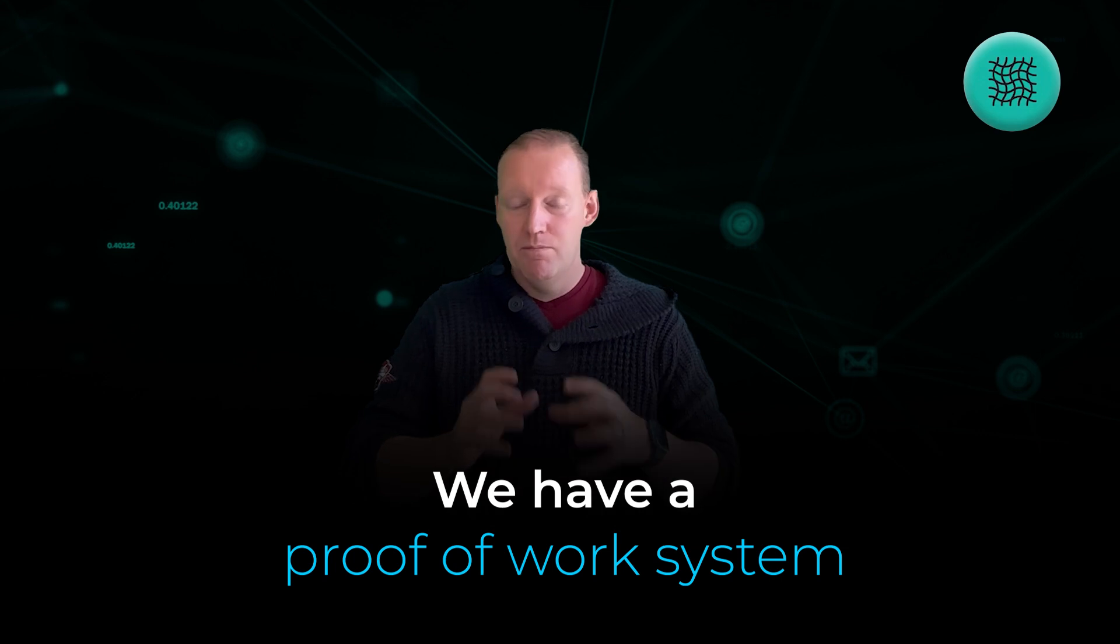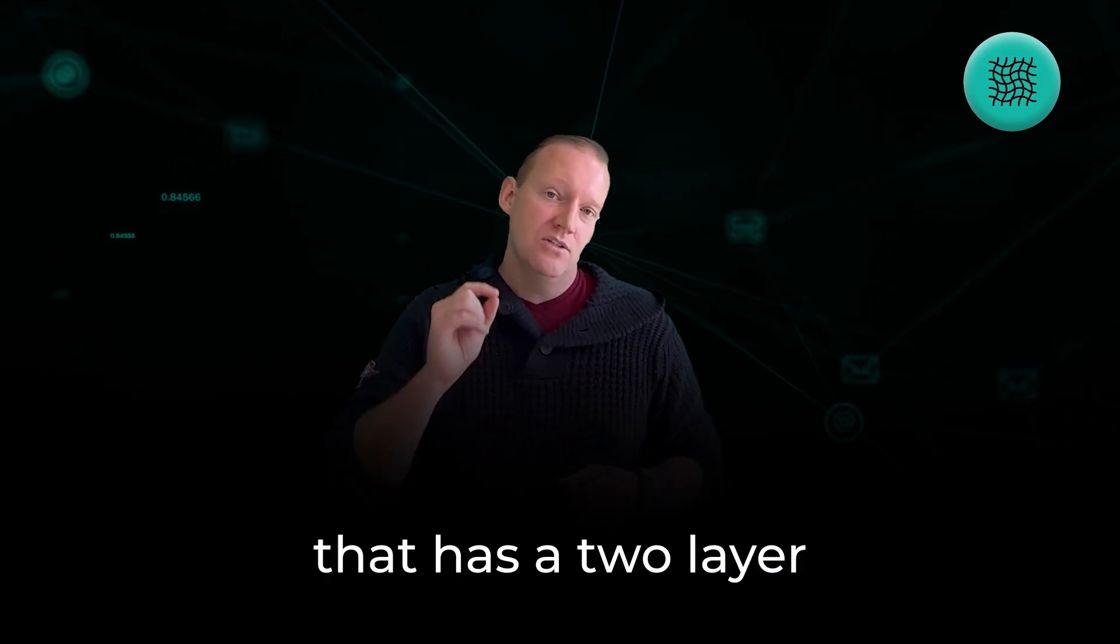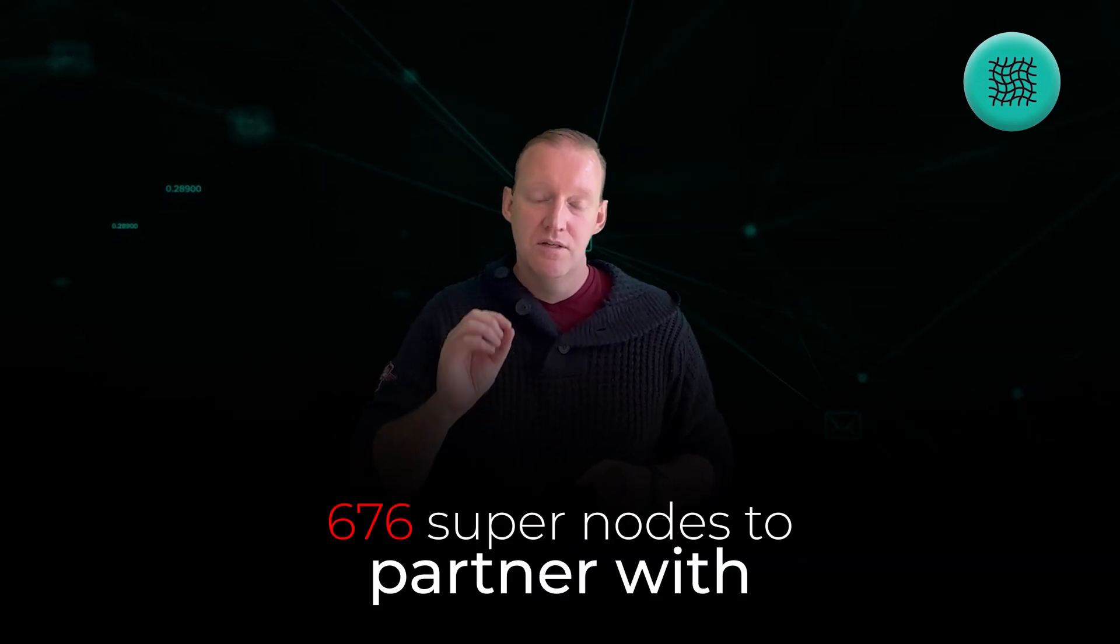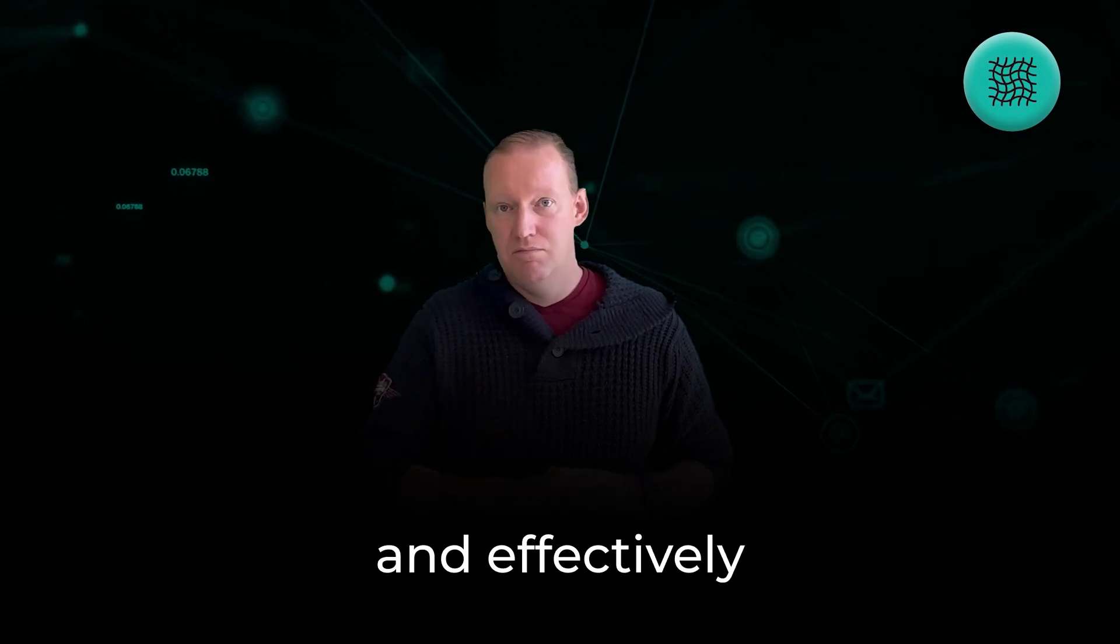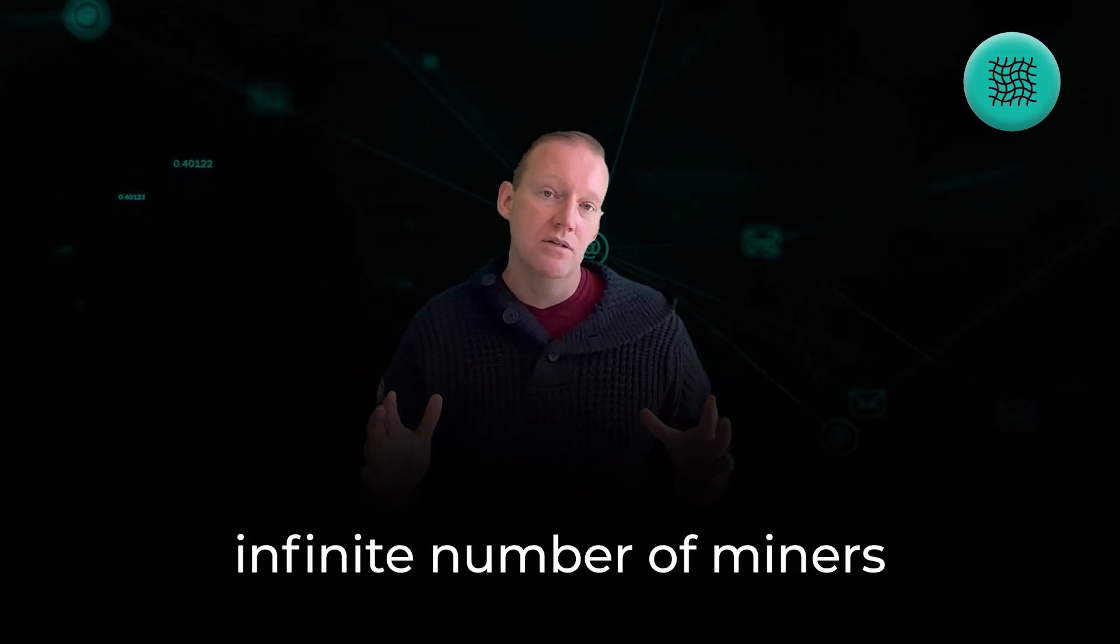What we end up with is the tokenomics being as follows. We have a proof-of-work system that has a two-layer approach that requires 676 super nodes to partner with effectively infinite number of miners in order to solve those problems. It's a powerful approach and particularly if the team can pull it off in such a way that the problems that are getting solved are getting solved at a scale faster than what we see with the current approaches in AI, we could be onto a game changer and I'm super interested to see how it works out.